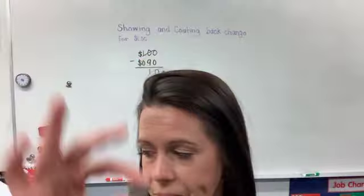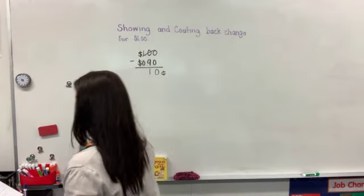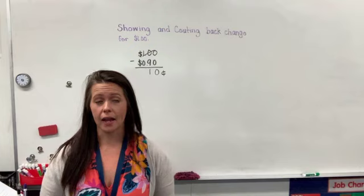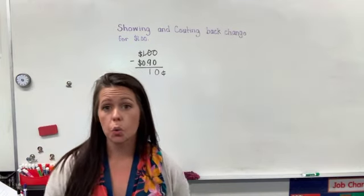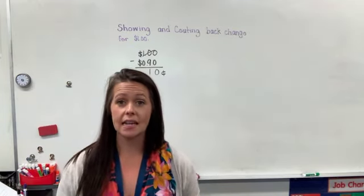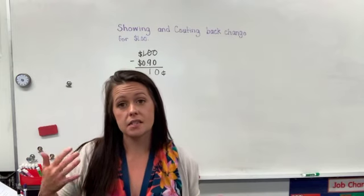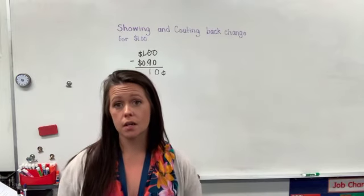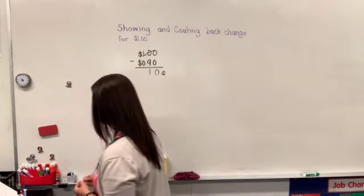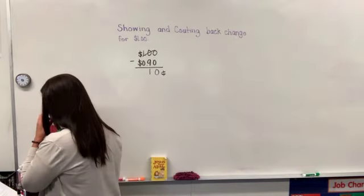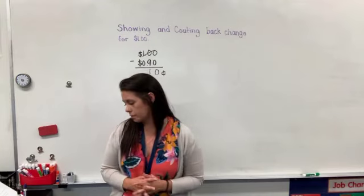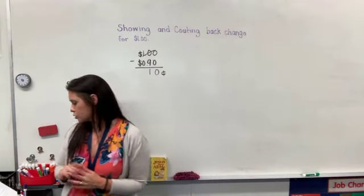We can also count by 10s: 10, 20, 30, 40, 50, 60, 70, 80, 90 — and it's 10 more to get to a dollar, so I would get 10 cents back. Now I'm going to buy something else because we're still at our store.